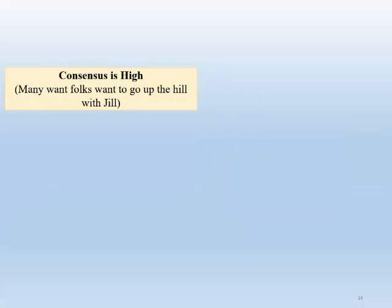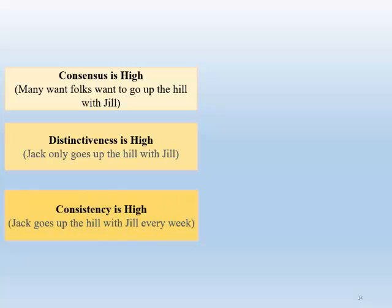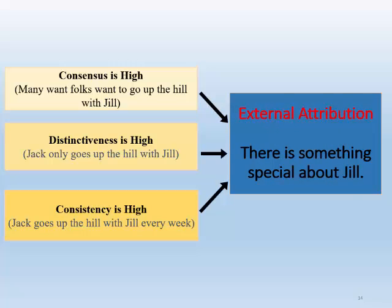Now let's look at a second example of how we would judge Jack's behavior if the information was different. Imagine many people want to go up the hill with Jill — consensus is high. Jack only goes up the hill with Jill — distinctiveness is high. And Jack goes up the hill with Jill every week — consistency is high. In this example, consensus, distinctiveness, and consistency are all high. Thus, we are most likely to make an external attribution: Jack goes up the hill because Jill is special.